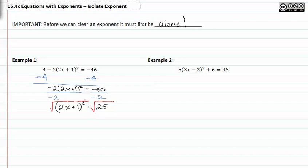I've undone that exponent, so the 2x + 1 drops out equals plus or minus square root of 25. So I get 2x + 1 = ±5.